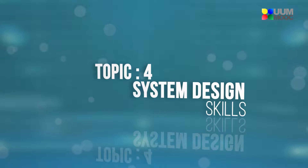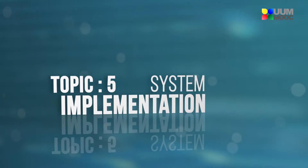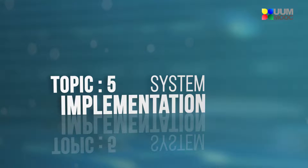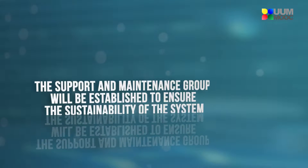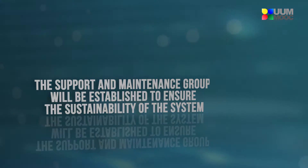Once the user requirements have been processed, you will be exposed to system design skills, which will be covered in Topic 4. The final step in the system development process is system implementation, which will be discussed in the last topic. In this phase, a support and maintenance group will be established to ensure the sustainability of the system.